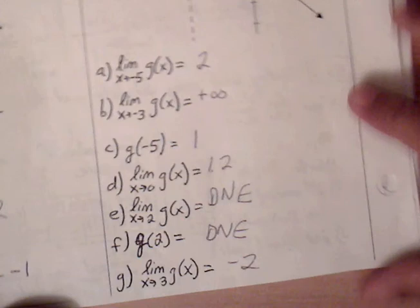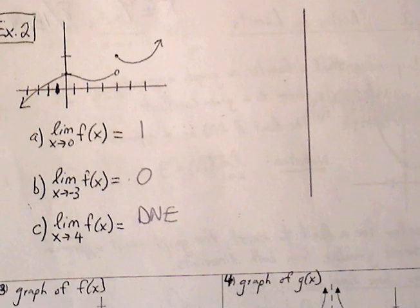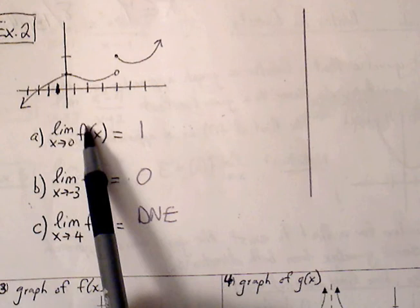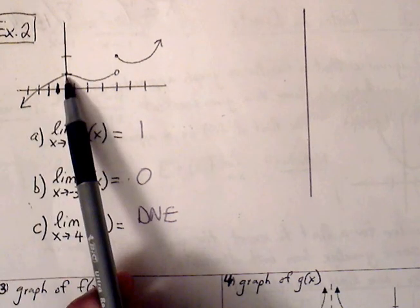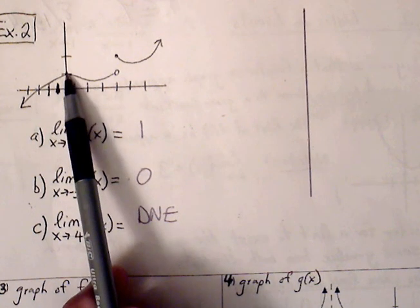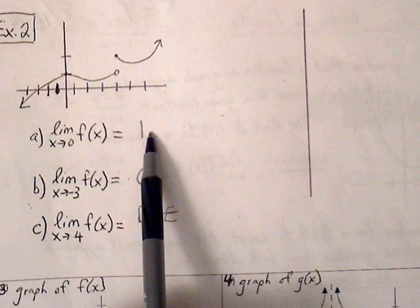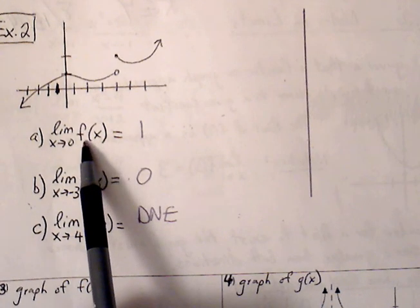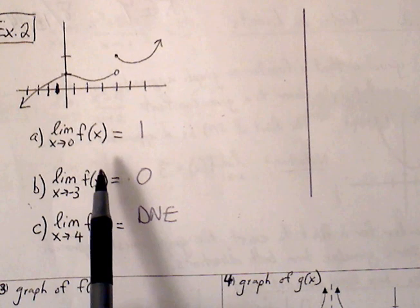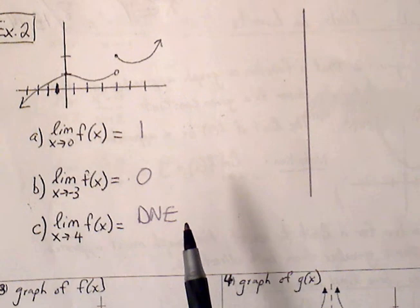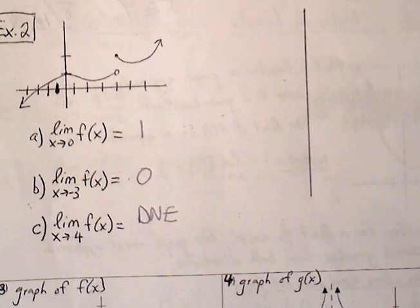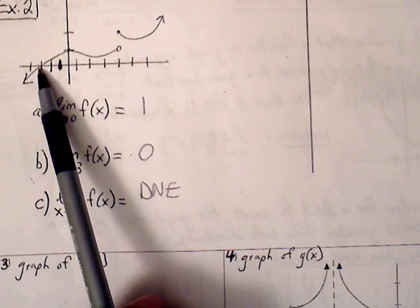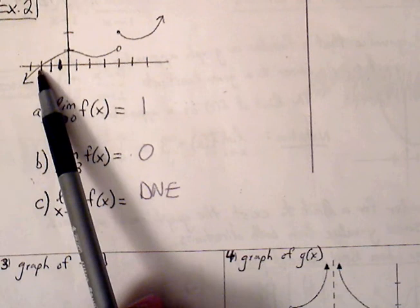Looking at some examples: for part a, the limit as x approaches 0 — as we get closer towards 0, the graph crosses through the ordered pair (0, 1), so the y-value is simply 1. For part b, the limit as x approaches negative 3 — as x approaches negative 3, the graph crosses through 0. So again, this is just like finding the ordered pair; it's going to be 0.